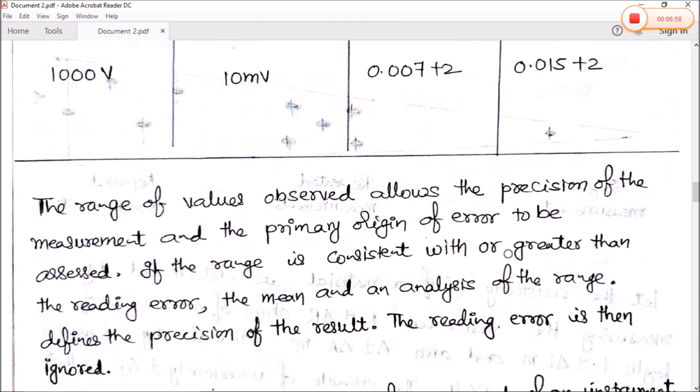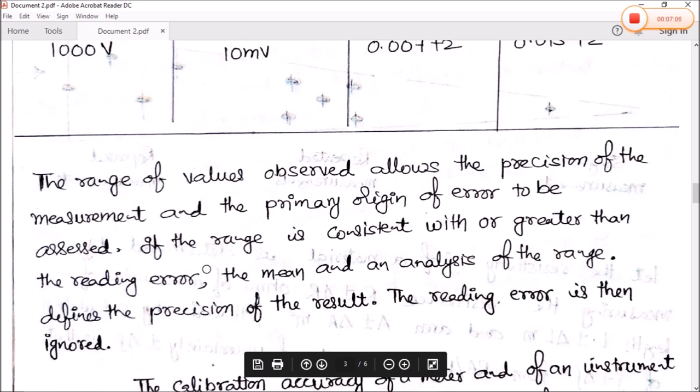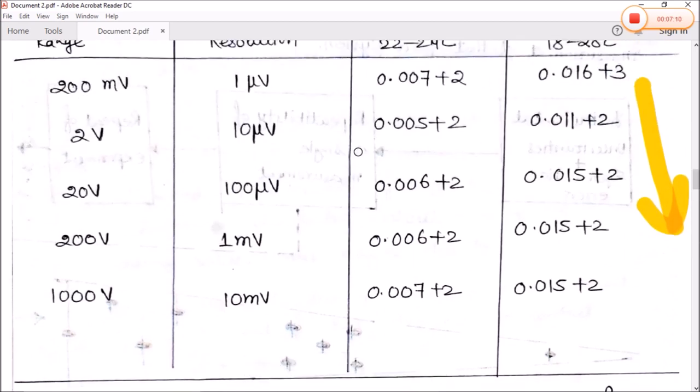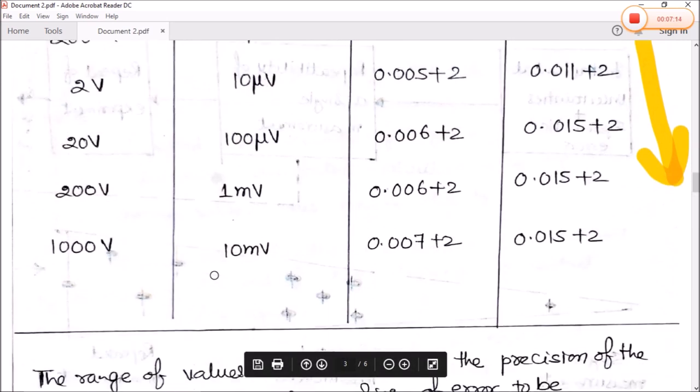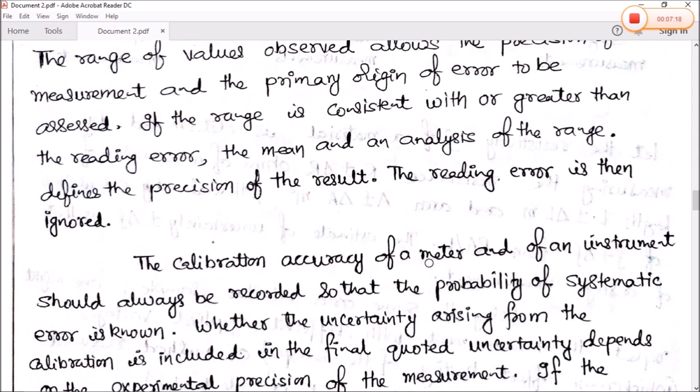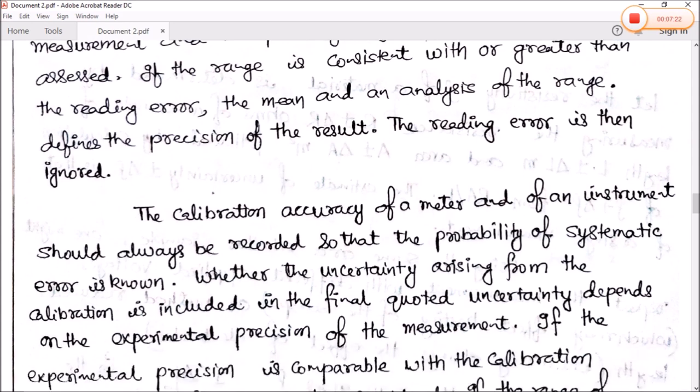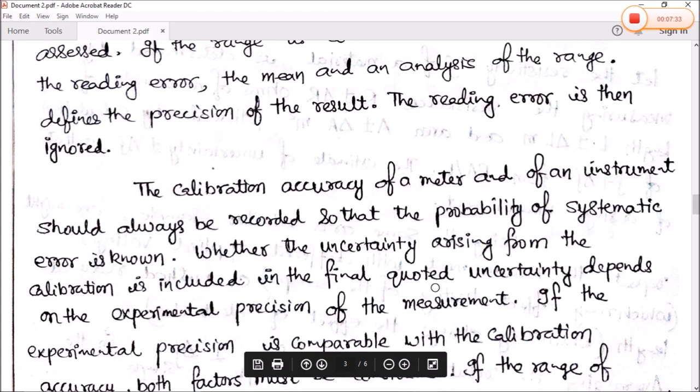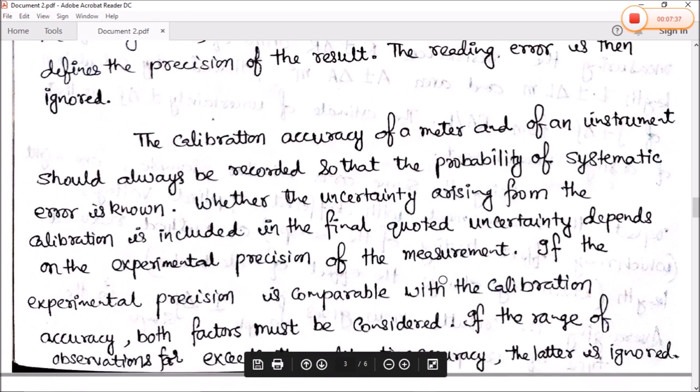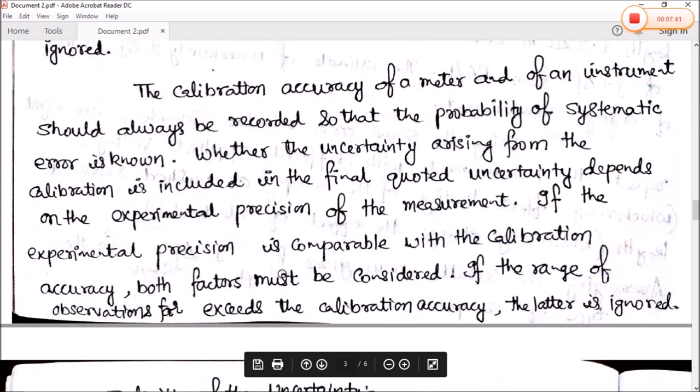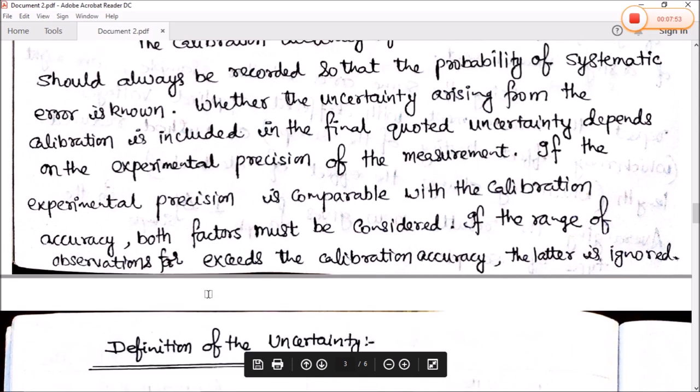Temperature: if it is measured for 24 hours between the temperature 22 to 24 degrees Celsius, the approximate accuracy is 0.007 plus 2. Next is for 2 volt: this value is 0.005 plus 2. For 20 volt it is 0.006 plus 2. And for 200 volt it is 0.006 plus 2, and for 1000 volt it is 0.007 plus 2. Similarly, if the experiment occurs for one year, then for 18 to 28 degrees Celsius, the value of the range 200 millivolt is 0.016 plus 3, and so on. Whether the uncertainty arises from calibration is included in the final quoted uncertainty depends on the experimental precision of the measurement. If the experimental precision is comparable with the calibration accuracy, both factors must be considered. If the range of operation exceeds the calibration accuracy, the latter is ignored.